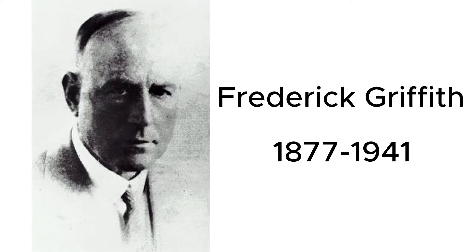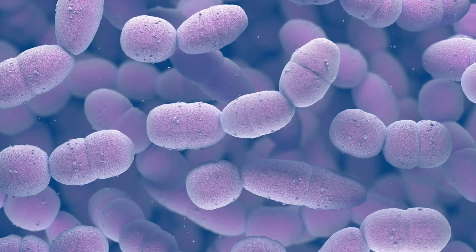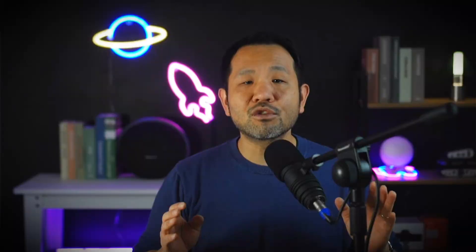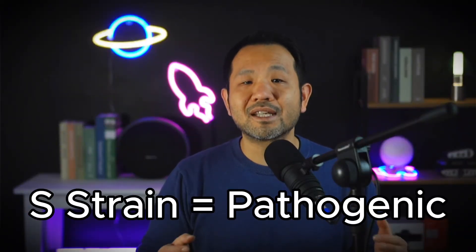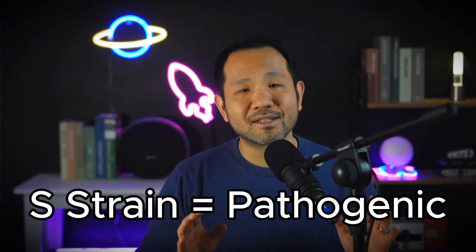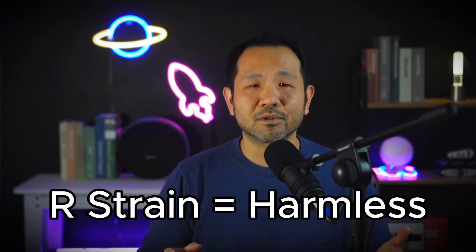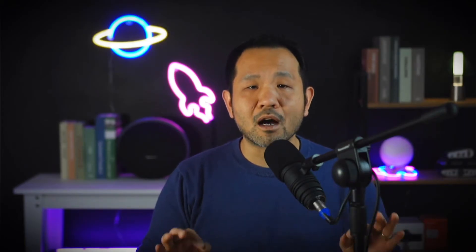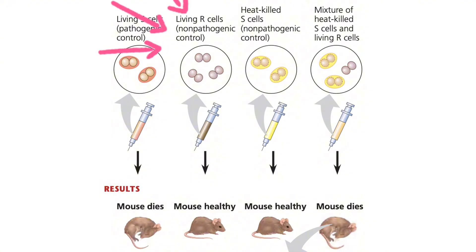Frederick Griffith was a British bacteriologist studying Streptococcus pneumonia — a bacteria that causes strep infections. He was interested in two strains: the S-strain and the R-strain. The S-strain was responsible for causing disease, while the R-strain didn't do anything harmful. In 1928, through a peculiar experiment, Griffith inoculated mice with the S-strain, which naturally resulted in the death of the mice. With the R-strain, the mice were fine.